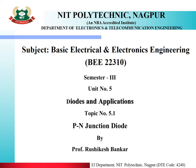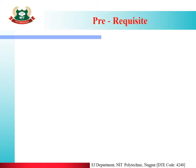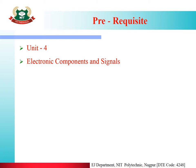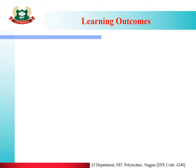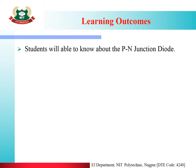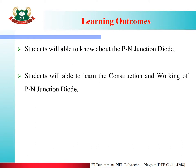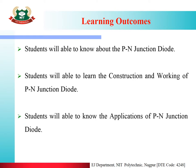Under this unit, we will start Topic No. 5.1, i.e. PN Junction Diode. The prerequisites are Unit No. 4, i.e. Electronic Components and Signals. Topics covered today: PN Junction Diode, Construction and Working of PN Junction Diode, and Applications of PN Junction Diode. The learning outcomes are: you will be able to know about the PN Junction Diode, learn its construction and working, and know its applications.